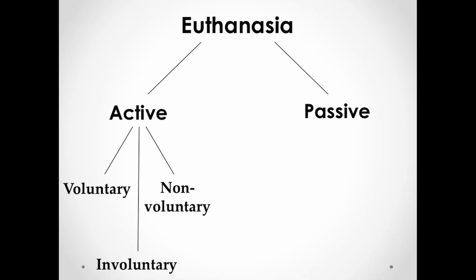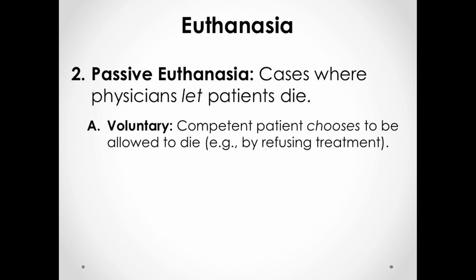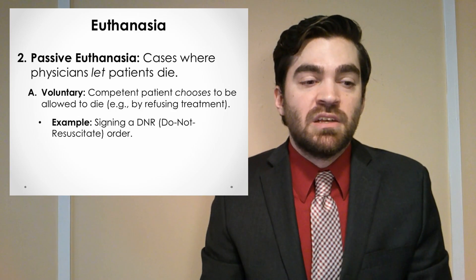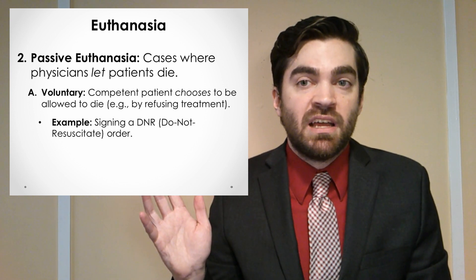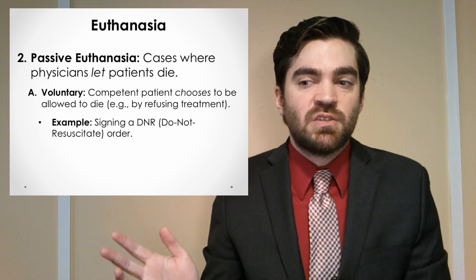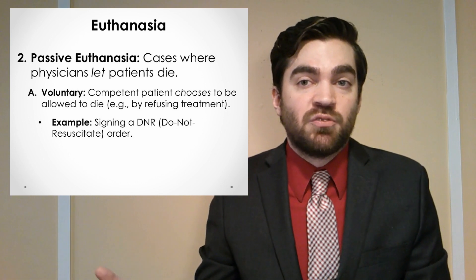Switching over to passive euthanasia, this is when physicians allow patients to die — the patients are already dying of something and physicians just don't step in to prevent that. In voluntary cases, a competent patient has knowingly and willfully chosen this path. So signing a DNR, for example — a do not resuscitate order. The idea is if the patient goes into arrest, they've already signed on saying they don't want to be resuscitated. Physicians step back and let the patient die, but it's the patient's choice driving that decision. That's what makes it voluntary.